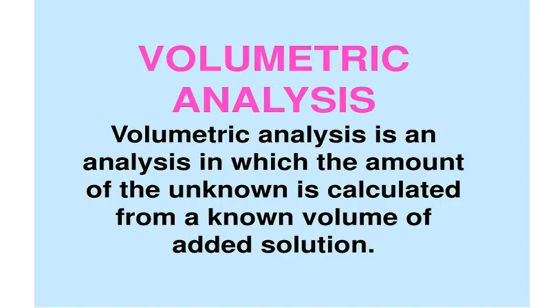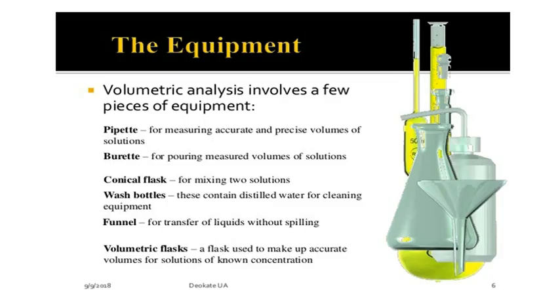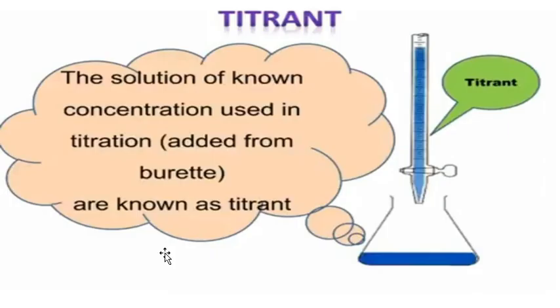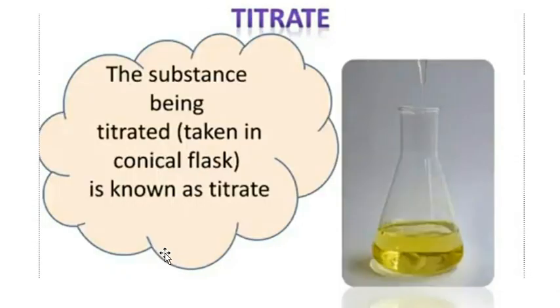To summarize: volumetric analysis is used to estimate the amount of unknown solution present in the given solution using a known volume. The equipment used includes pipette, burette, conical flask, wash bottle, funnel, and volumetric or standard flask. Titrant is the solution whose concentration is known, taken in the burette. Titrate is the substance being titrated — the solution taken in the conical flask.